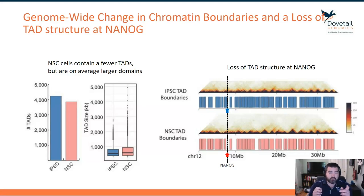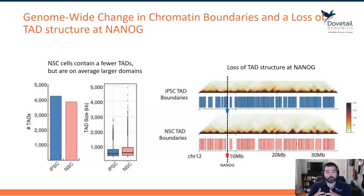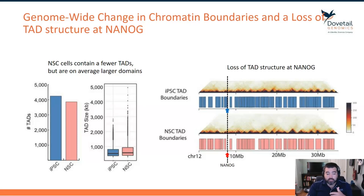These first two lines of evidence are great for pointing at larger structures that drive the NANOG transcription signal, but they don't really tell us much about what the specific enhancer-promoter interactome looks like around NANOG.